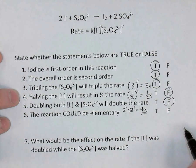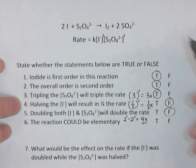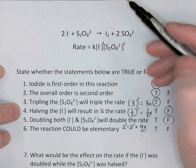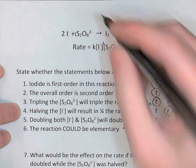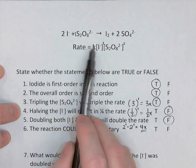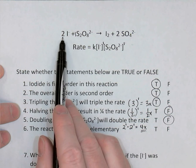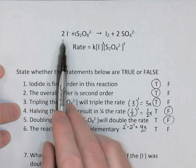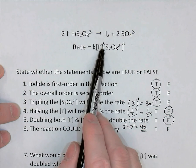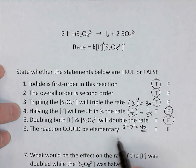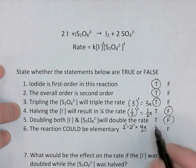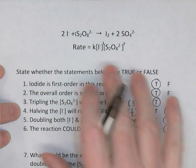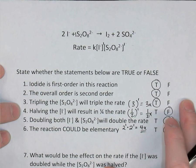Could this reaction be elementary? We compare the orders in the rate law to the coefficients in the balanced equation. The coefficient of iodide is 2, but its order is only 1 — they do not match. Because the coefficient is not the same as the order, the reaction could not be elementary — false. This reaction would have to happen through a multi-step mechanism.